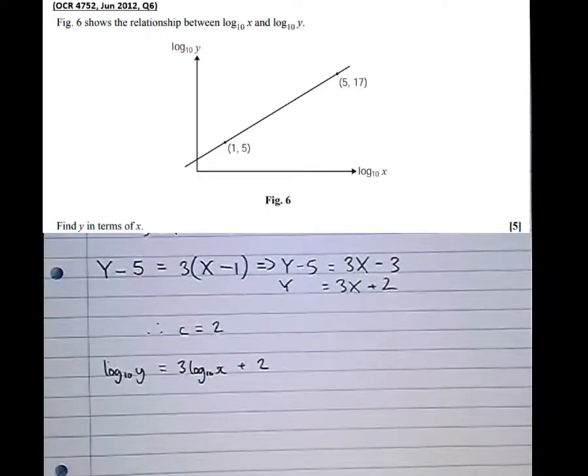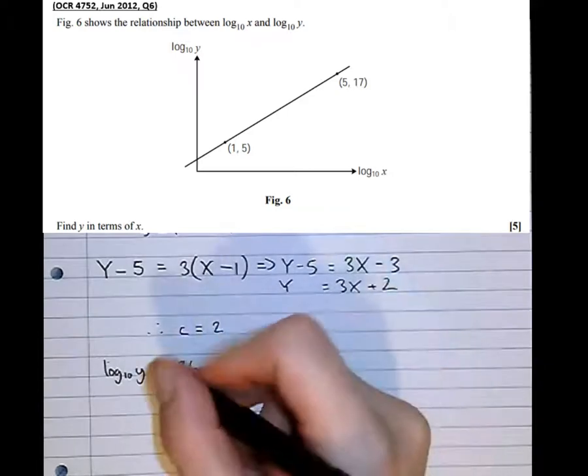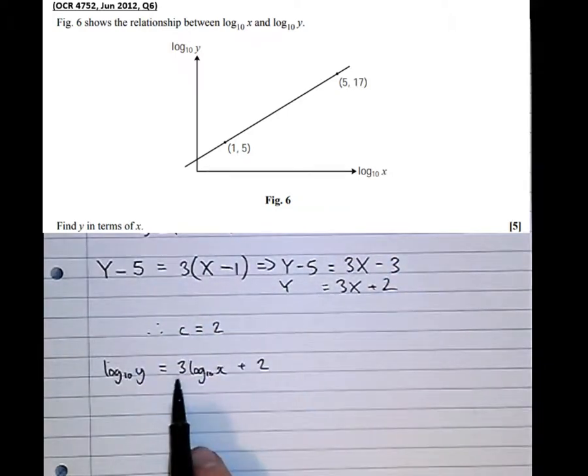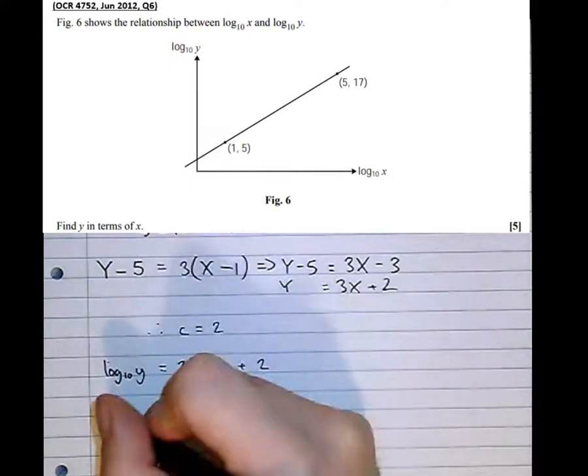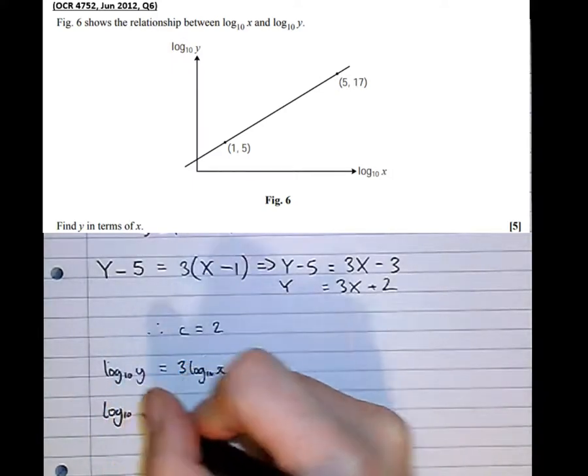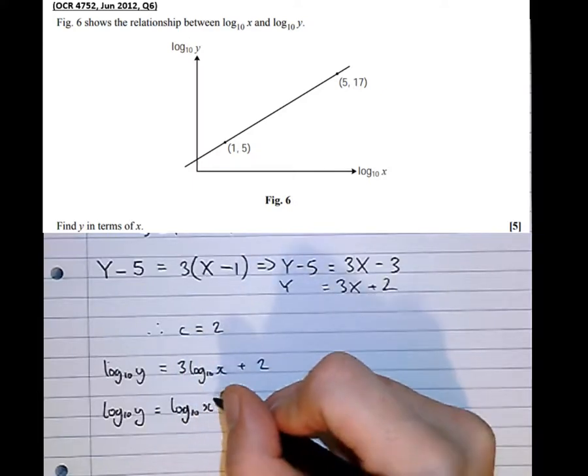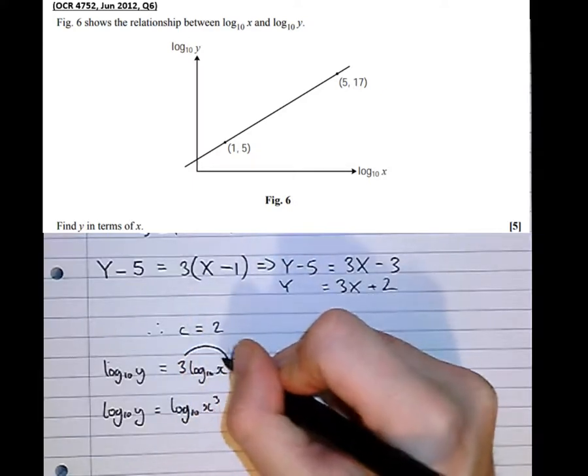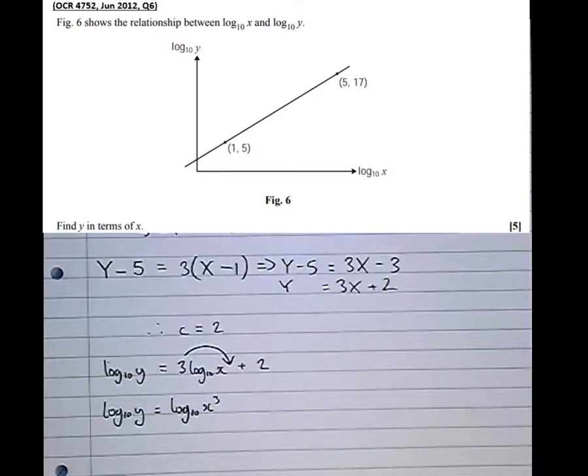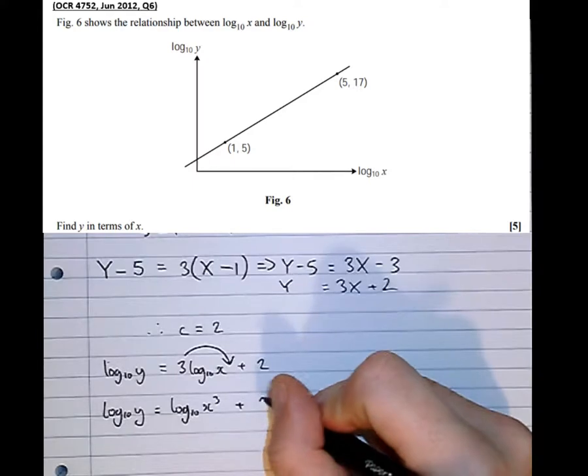Now what we're trying to do here is rearrange it into the form y equals, it asks us to find y in terms of x. So I need to eliminate any logarithms. So what I'm first going to do, I'm going to notice that the power rule can be used here to get this 3 into the power of x. So log to the base 10 of y equals log to the base 10 of x cubed. So that power, using the power law, goes as the power of x plus 2.